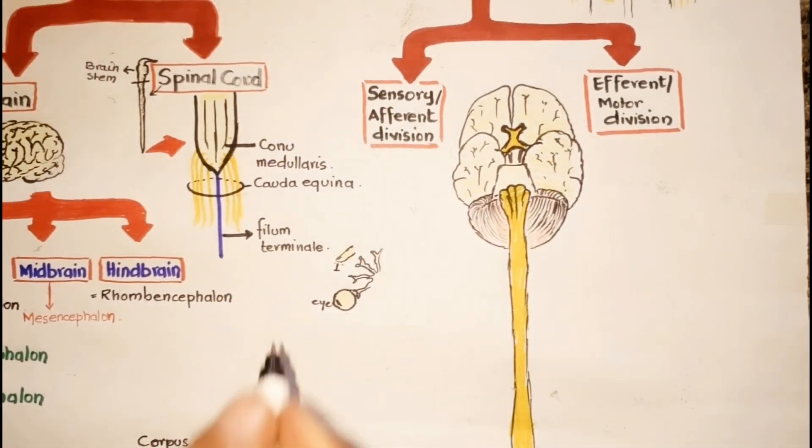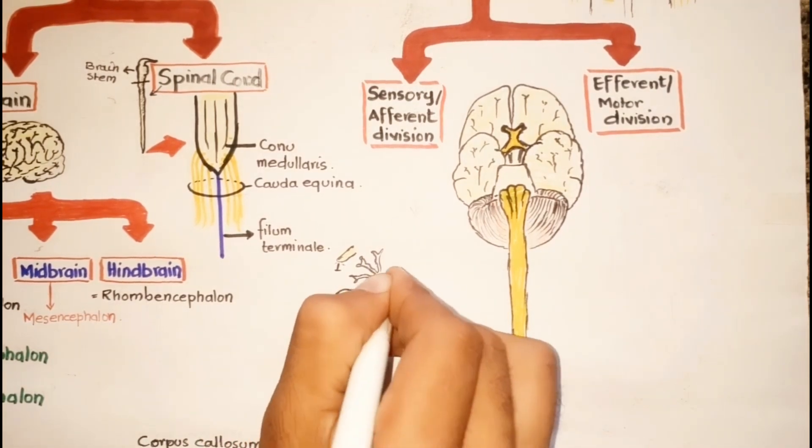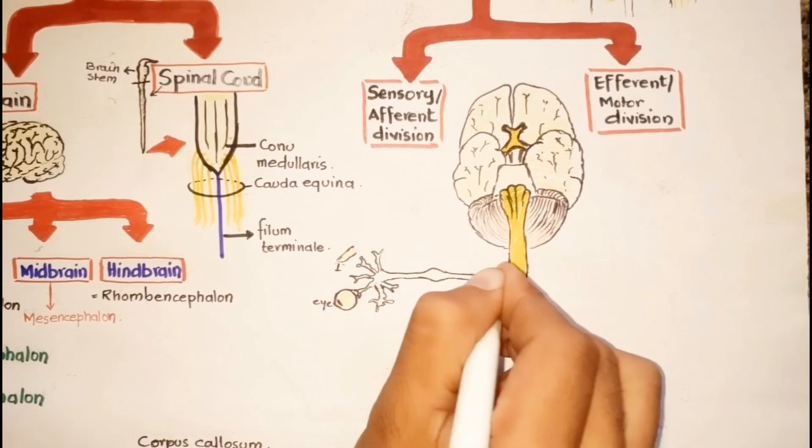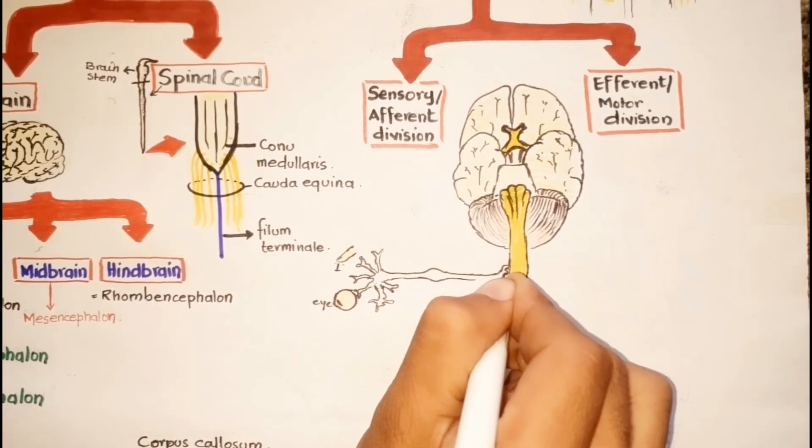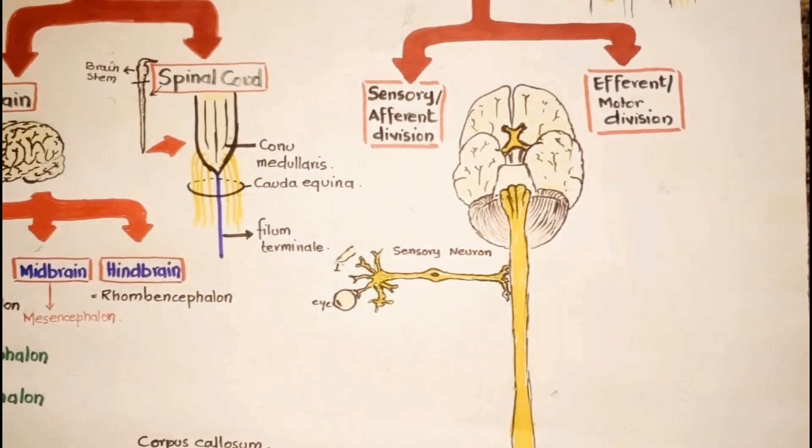The sensory division is composed of neurons that carry information from the periphery, from the sensing organs, to the central nervous system, as I'm drawing it here.